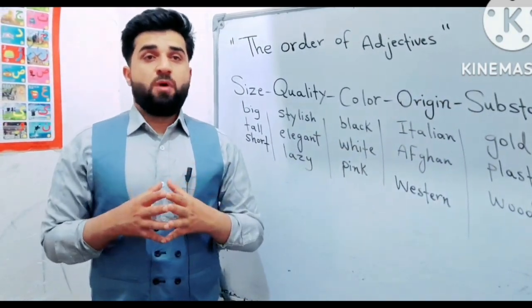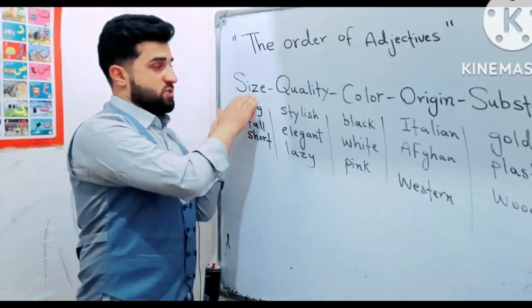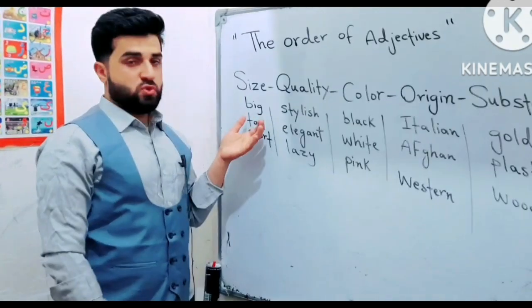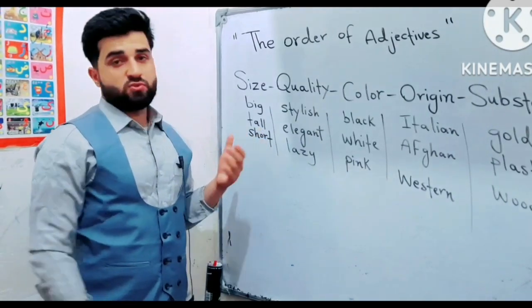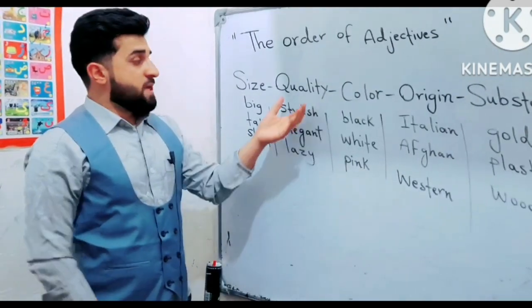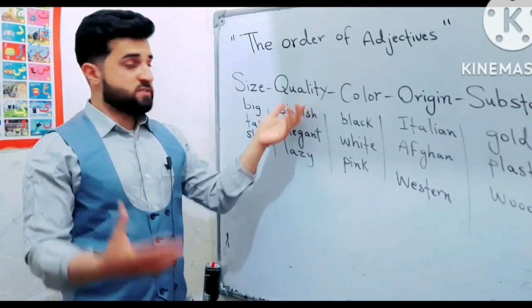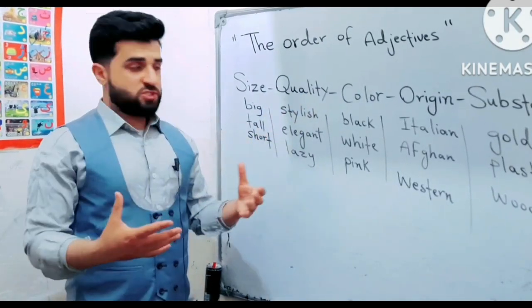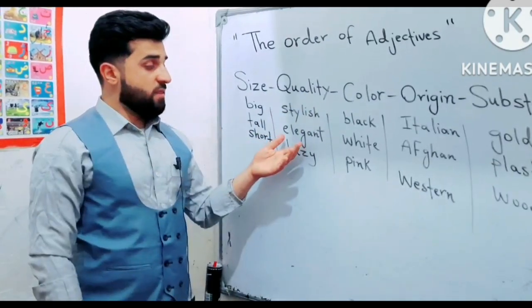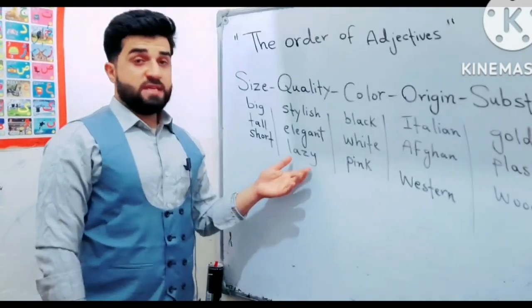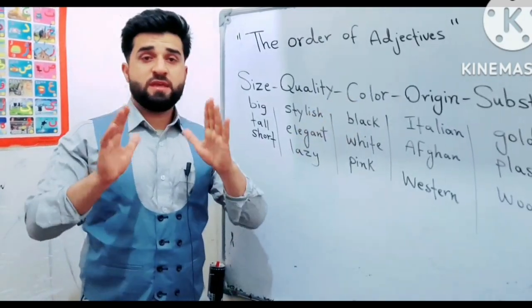For example, let's say size. For example: big, tall, short. Then quality — for example: stylish, elegant, lazy. And color — for example...